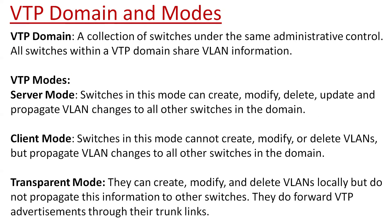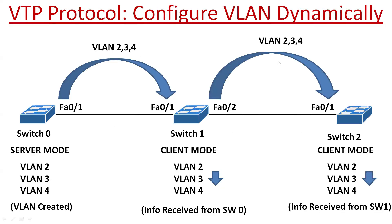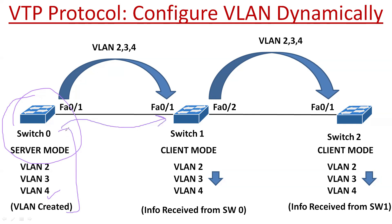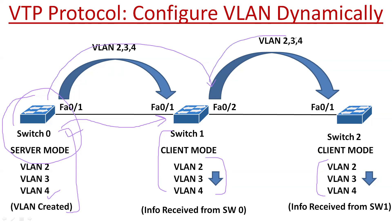This is how the VTP protocol works. The switch in server mode can create VLANs and will forward the VLAN information to the other switches. These VLAN details will be forwarded to the switches that are in client mode, and by the help of that, those client switches will create the VLAN on their database. So VLAN information can be forwarded to other switches by VTP and configured dynamically.